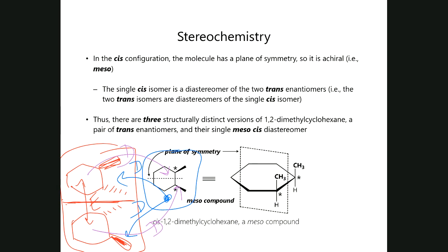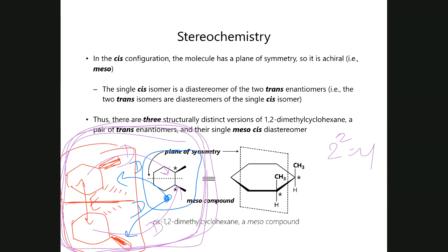The single meso compound is a diastereomer of each of the two enantiomers of the trans compound. You can also say that the pair of enantiomers of the trans compound are diastereomers of the meso compound, which is the cis compound. And of course, the two trans compounds are enantiomers. Remember, there's no enantiomer for the cis compound because it's a meso compound — it has symmetry, there's no such concept. So technically, in theory, up to 2² which is four, but it turns out there's only three — because one of them is a meso compound.